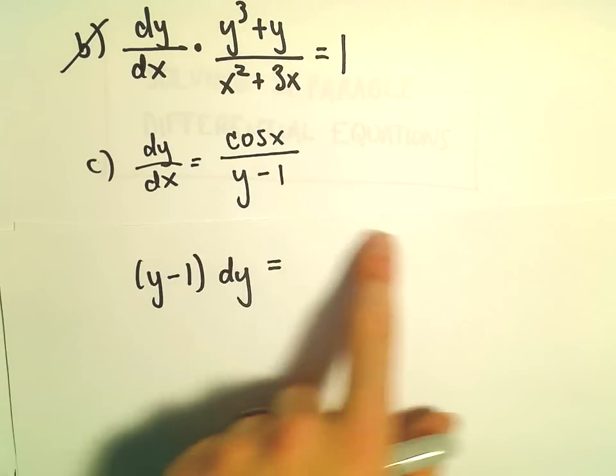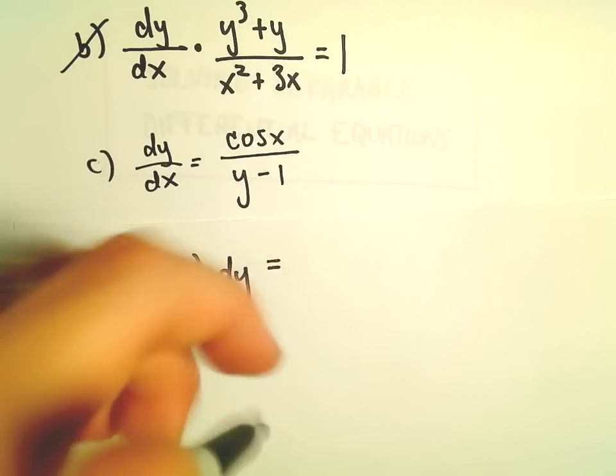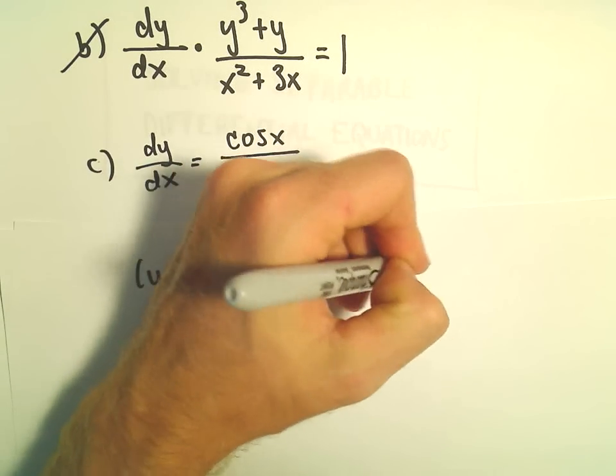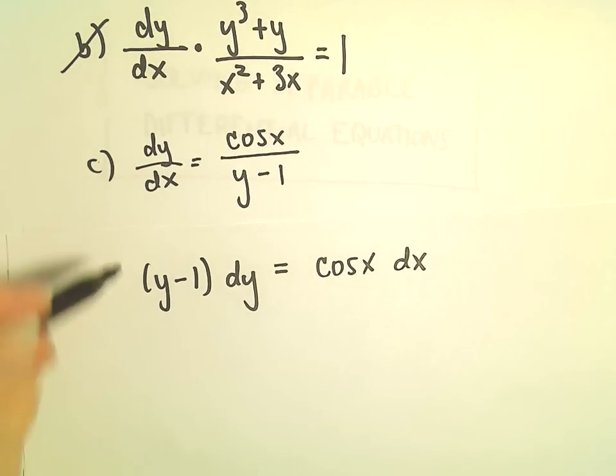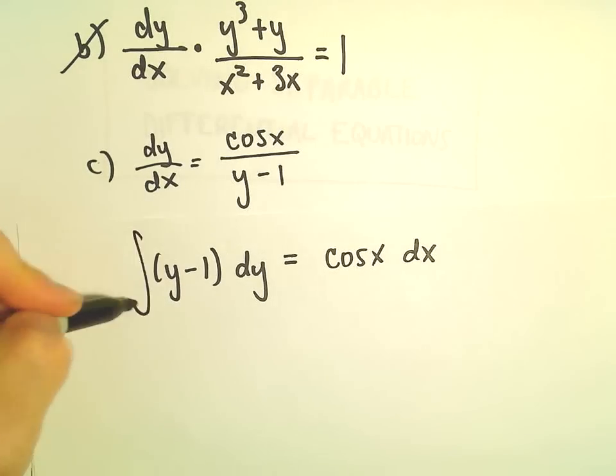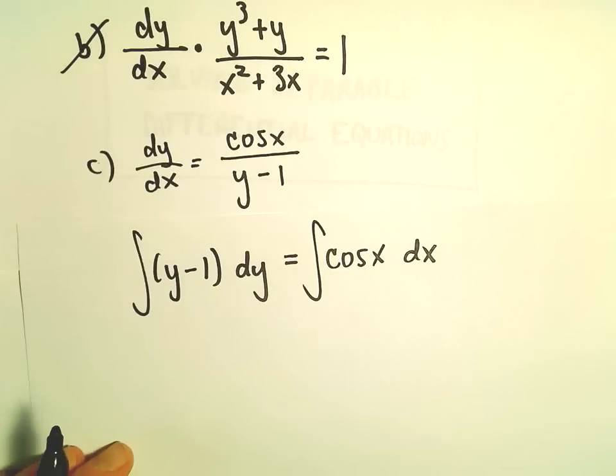On the actual right side of the equal sign, we'll have dx times cosine x. Now what we're going to do, we've got all the y's on one side, all the x's on the other. We can just find the antiderivative of both sides.